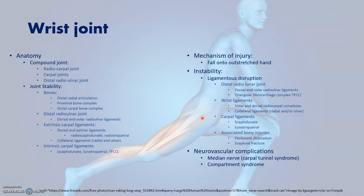The proximal carpal row consists of the scaphoid, lunate, and triquetrum. Stability is also provided by the ligaments, which can be divided into the extrinsic and intrinsic carpal ligaments. The extrinsic carpal ligaments include the dorsal and volar radioulnar ligaments, and the dorsal and palmar extrinsic carpal ligaments — including the radioscapholunate and radiotriquetral ligaments. The triangular fibrocartilage complex (TFCC) also plays a part in joint stability.